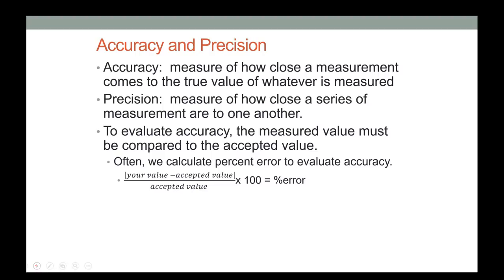To evaluate accuracy, we compare to the accepted value using percent error. Percent error is where you take your observed measurement and subtract the accepted value. It has absolute value signs because we don't care whether the result is negative or positive.